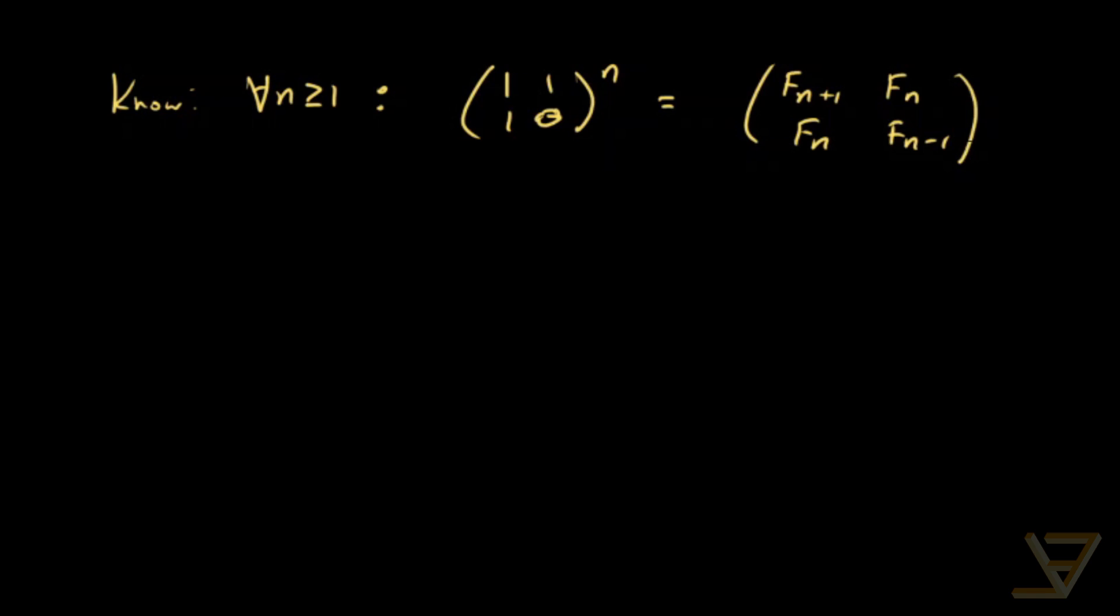So an interesting idea that we can pursue is taking the determinant of both sides. So we get the determinant of [[1,1],[1,0]] to the n is equal to the determinant of this, and we'll just compute it out. It's Fn+1 times Fn-1 minus Fn squared.